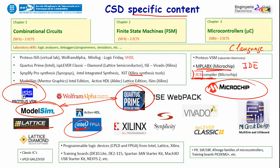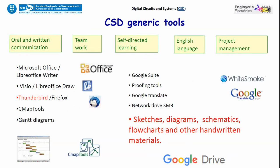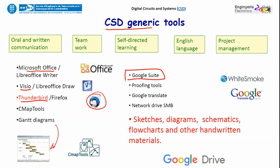From the perspective of generic tools, there are a myriad of them from many companies to organize projects and develop cross-curricular skills. You can use Microsoft Office, communicate effectively using Thunderbird, design projects using Gantt diagrams, and as a UPC student you have access to Google Suite to organize chat rooms and collaborate in many other ways.